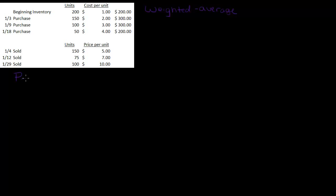Okay, remember periodic means that we're only doing the calculation at the end of the period. Let's add up the number of units we have: 200, 150 is 350, 450, 500 units total and $1,000 total. So that's my goods available for sale. Remember we always have to tie back to that number when we add our cost of goods sold and our ending inventory together. So 325 units sold which means my ending inventory is 500 minus 325, I've got 175 units in ending inventory.